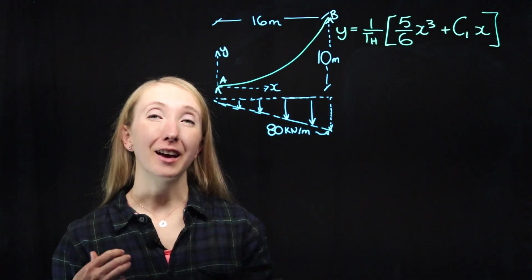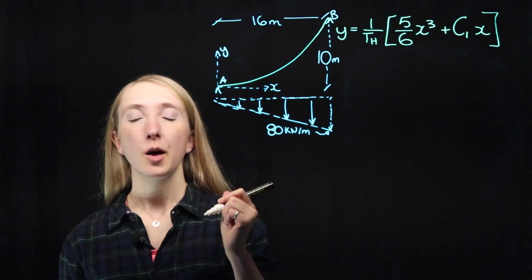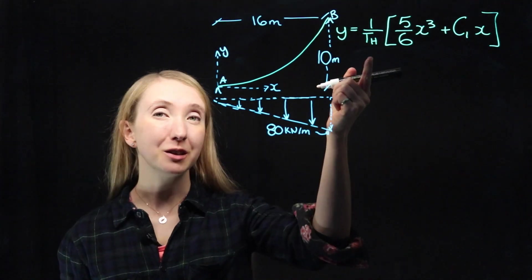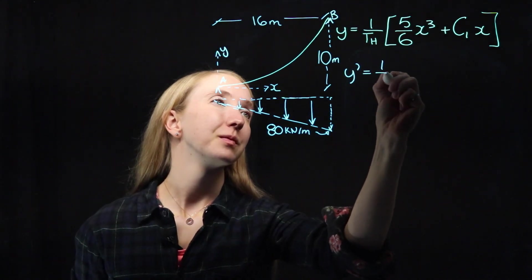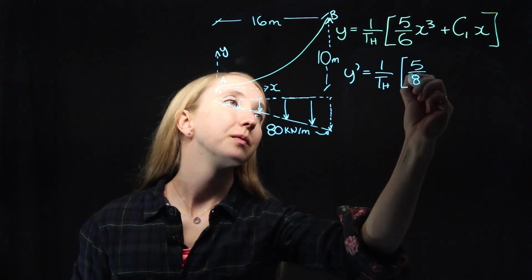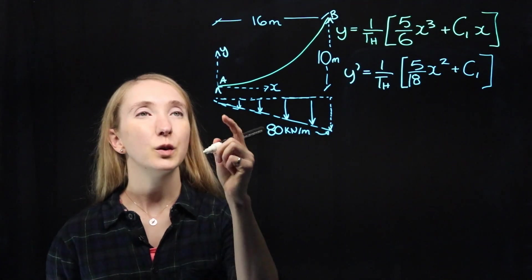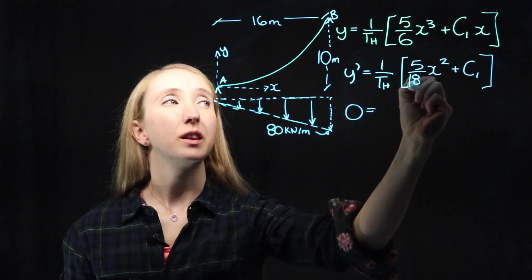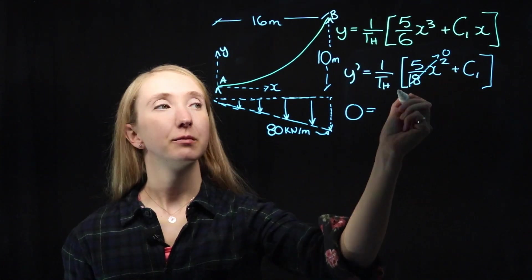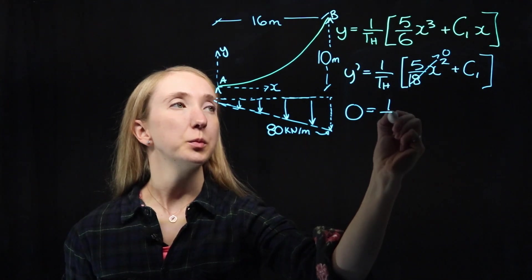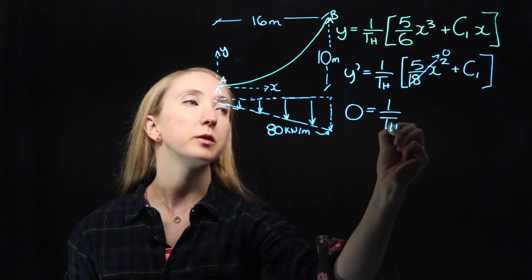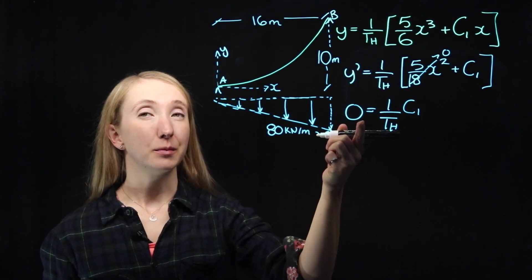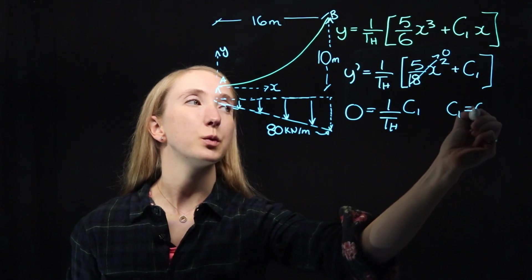Another nice boundary condition again comes from our origin, but this time using our slope equation. Our slope is the first derivative of our shape equation. At the origin, we have a slope of zero, and we have an x value that is also zero, which means our slope is simplified to one over our horizontal tension times our constant.